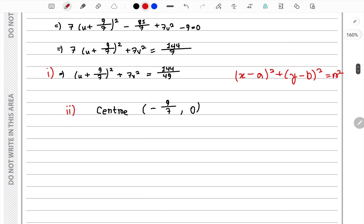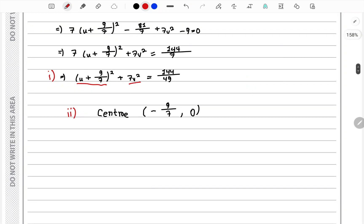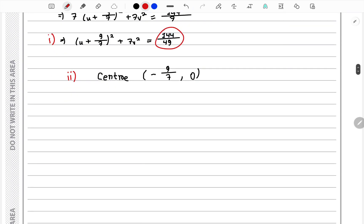From this equation, the center must be minus 9 by 7 comma 0, and this is r square, so we root it, which is 12 by 7. So these are the answers we need for this question.